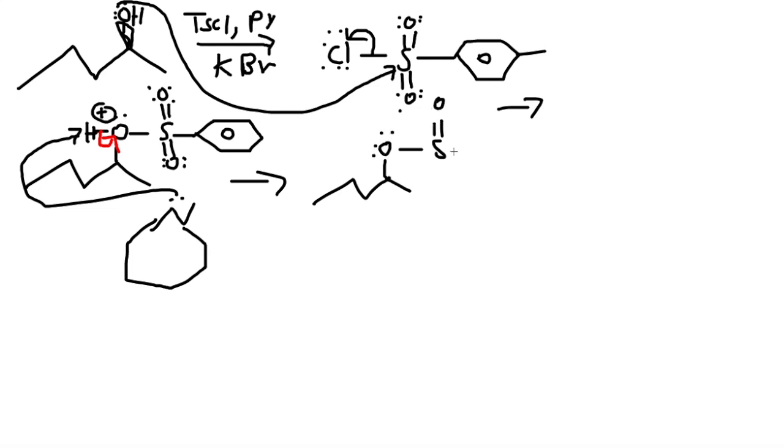Now from here the pyridine comes in. It has one lone pair. It comes and grabs this hydrogen. This hydrogen gives off this electron bond to this oxygen. And so we would have a structure that would look like this. Again, you can call it OTS and just leave it. But if your professor makes you draw the whole thing, then it's better to draw the whole structure out.